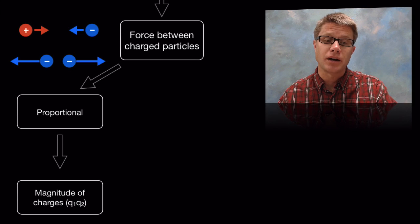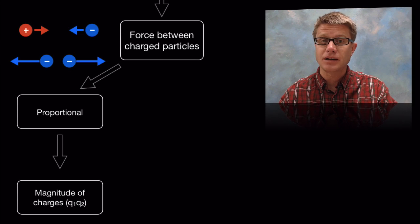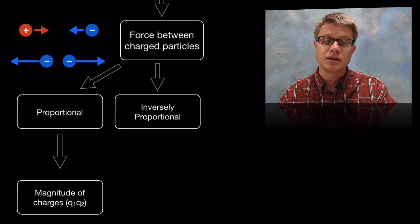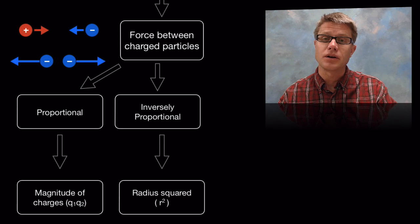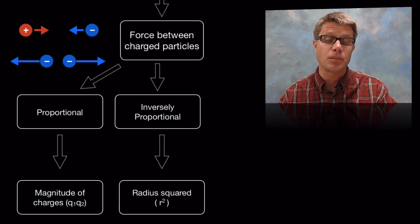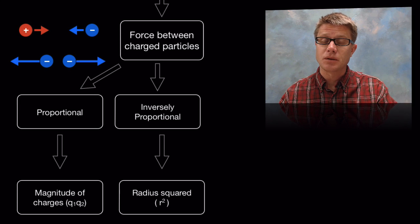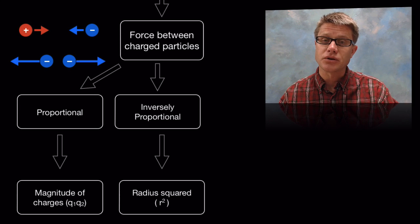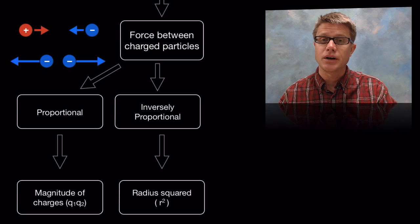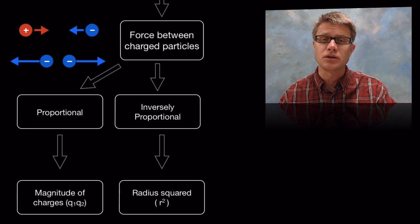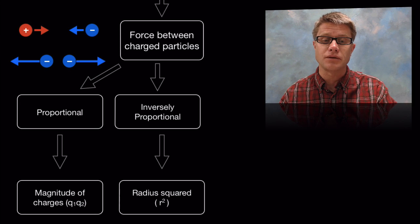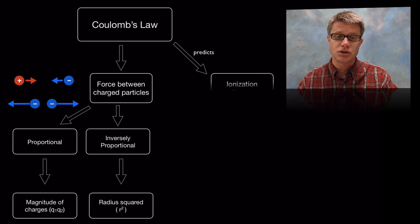And so Coulomb's law tells us the force between charged particles is proportional to their charges. So all you do is just multiply the two charges and that's going to give you the magnitude. It also tells us that it's inversely proportional to the square of their radius. In other words how far they are apart. So if things are far apart it's going to be less charge. As they get closer and closer and closer that charge is going to get greater. It's very similar to Newton's law of universal gravitation. This just deals on the small level with charges.